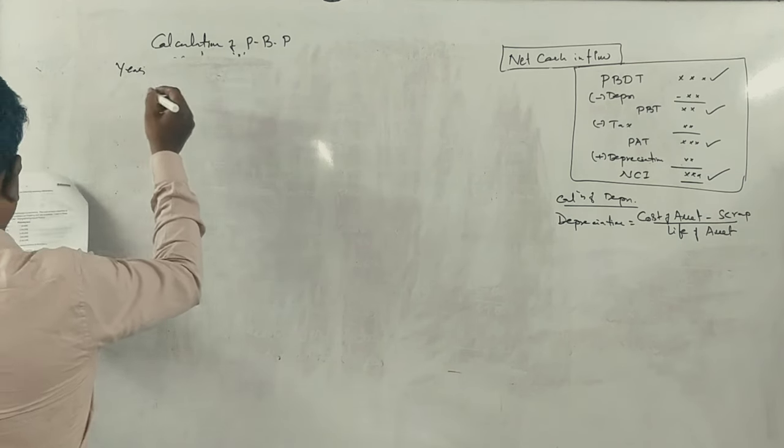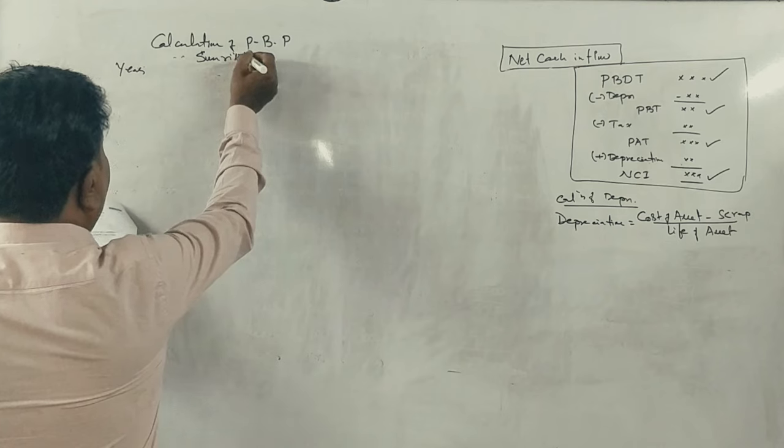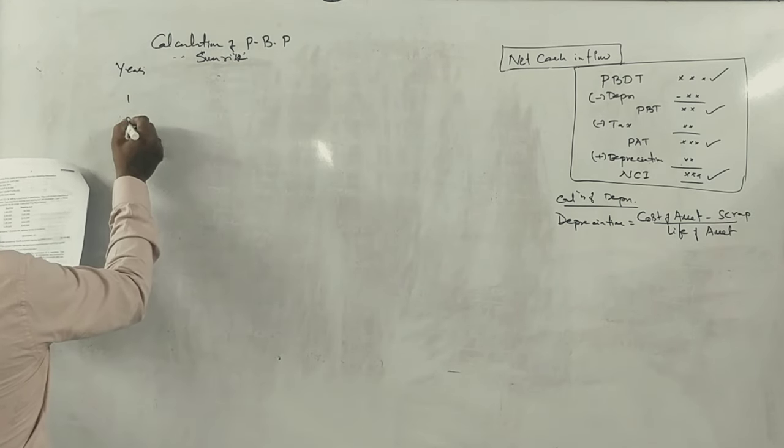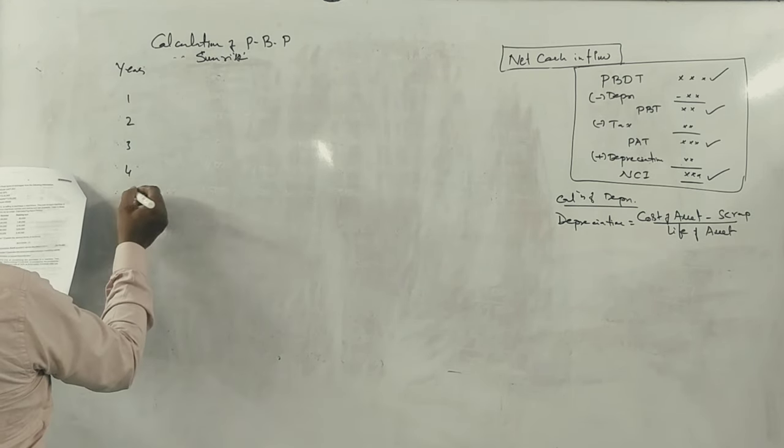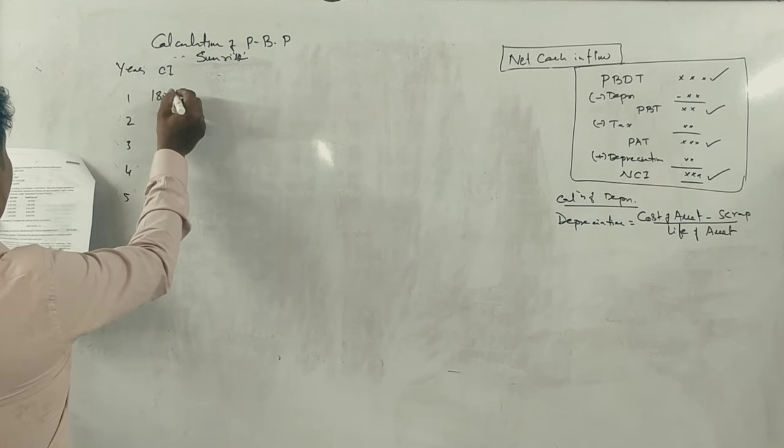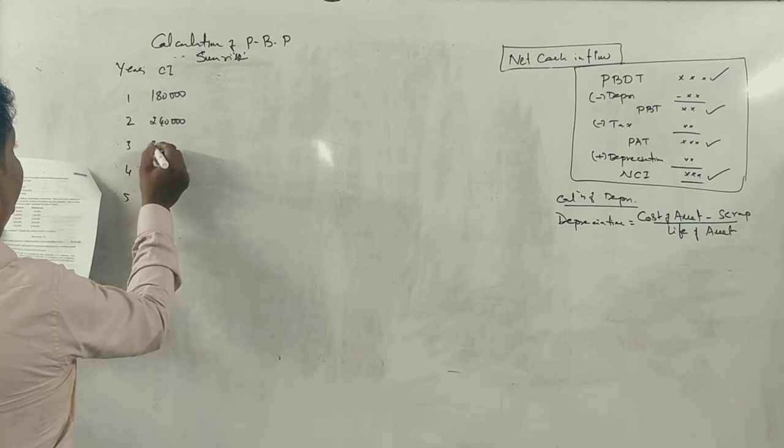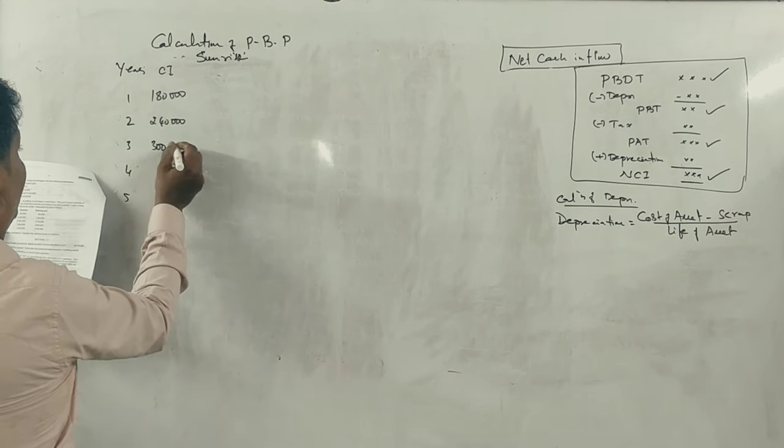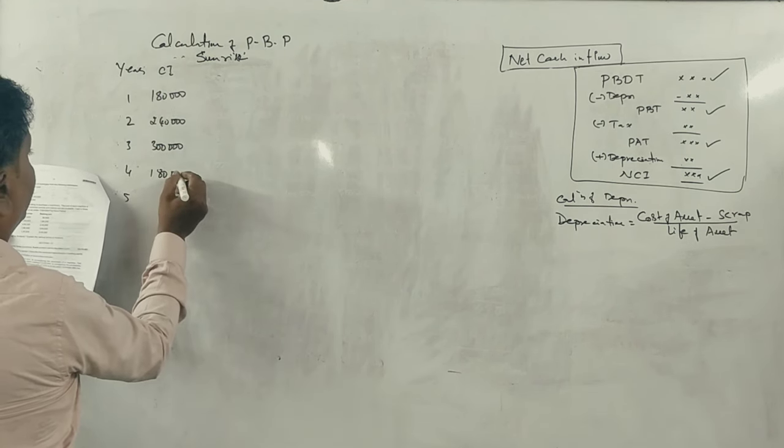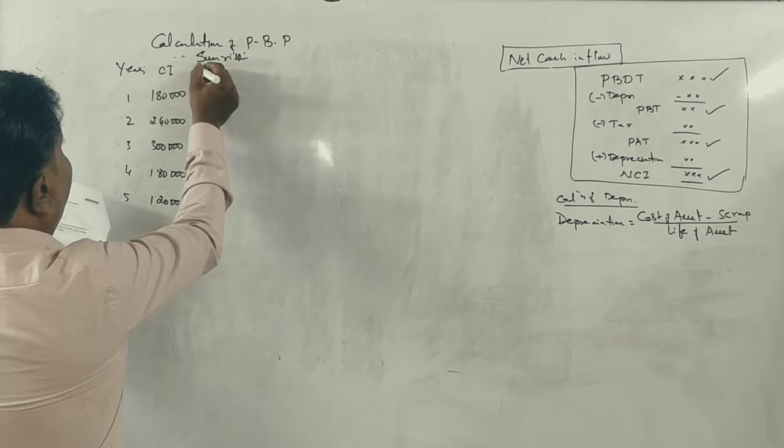First, Sunrise Company. Year 1, 2, 3, 4, 5. Cash inflows: 1 lakh 80, 2 lakh 40, 3 lakh, 1 lakh 80, 1 lakh 20.